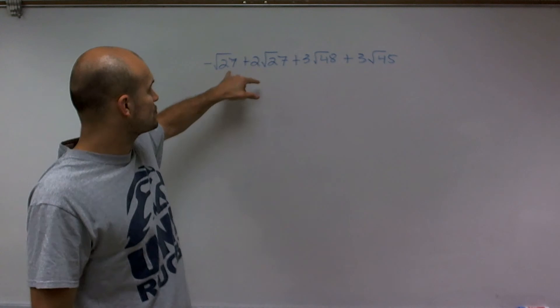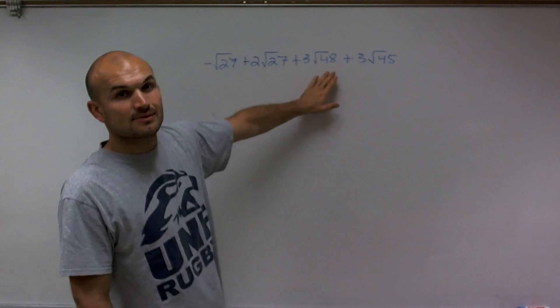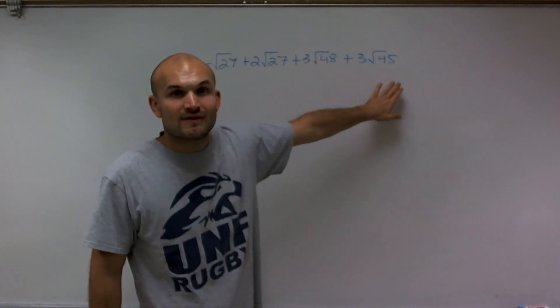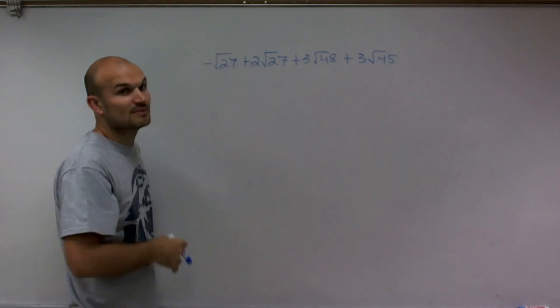I have like terms here, square root of 27, but I guarantee I'm going to have more like terms when I simplify square root of 48 and simplify square root of 45.